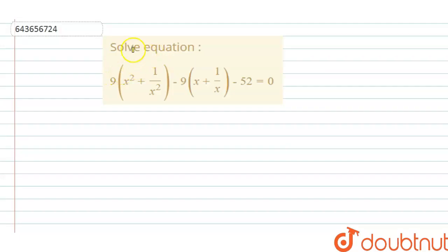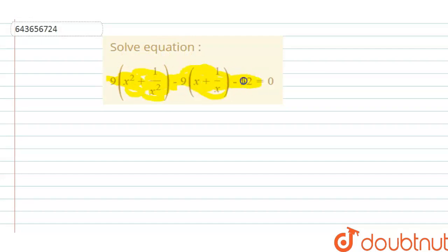Hello everyone. The question says: solve the equation 9 into x squared plus 1 by x squared, minus 9 into x plus 1 by x, minus 52 is equal to 0.